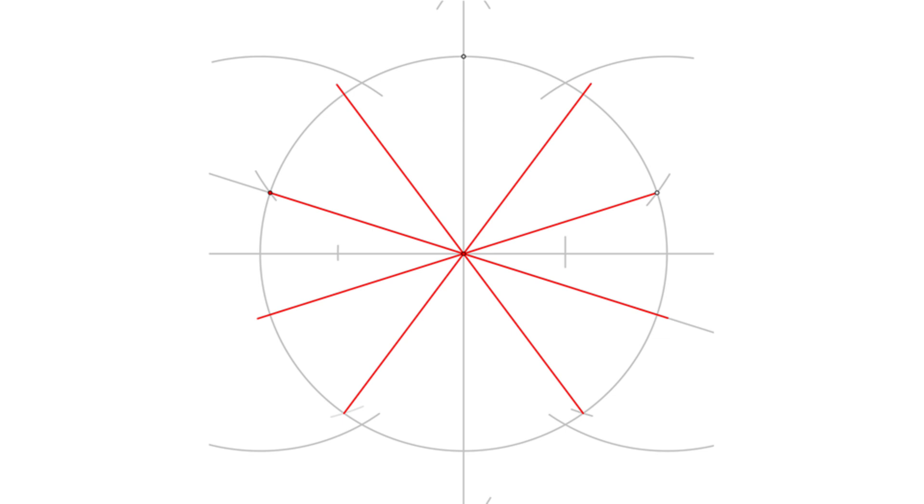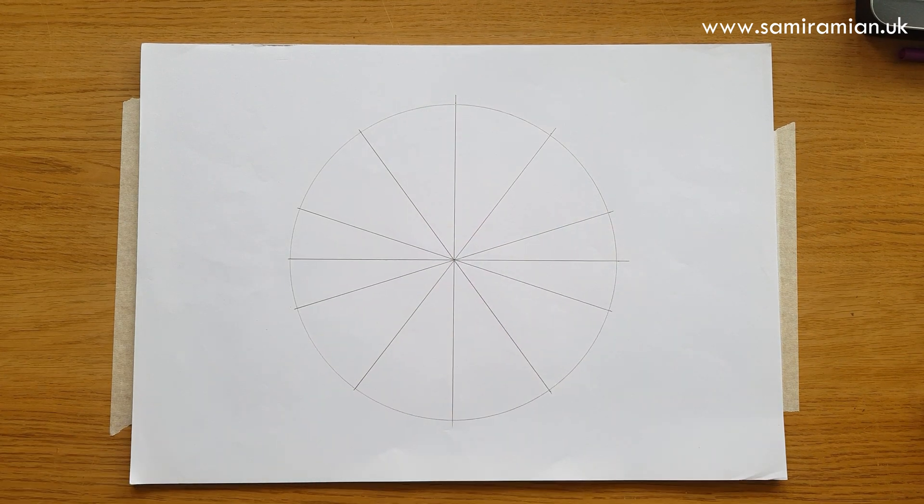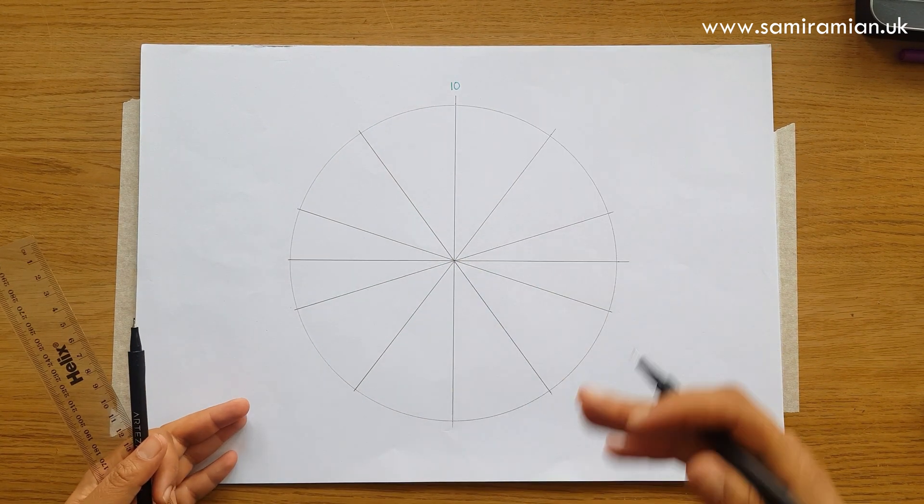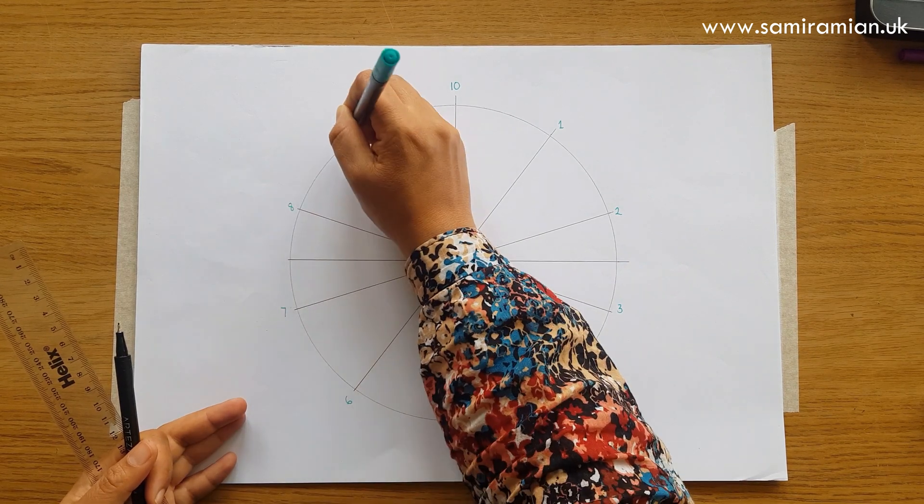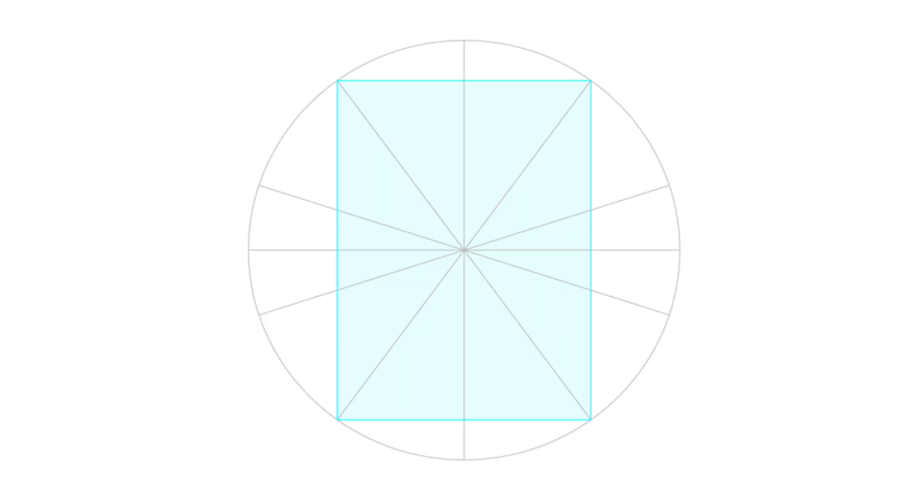Okay, so we will begin with our circle already divided into 10, and I'm going to number the points on the circumference. This will really help me explain certain points as we go through.